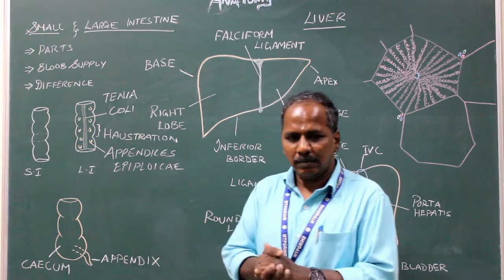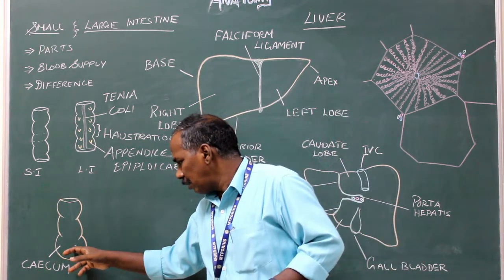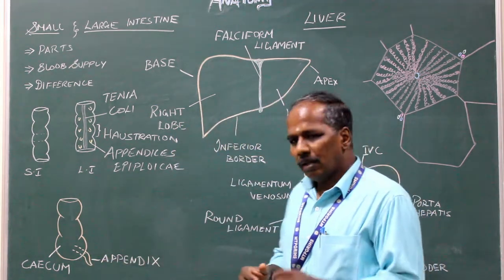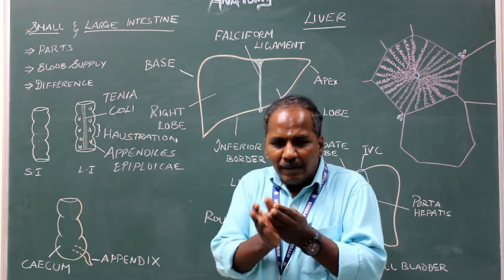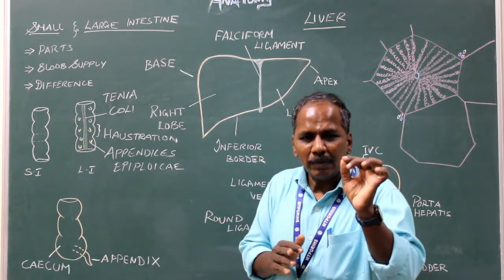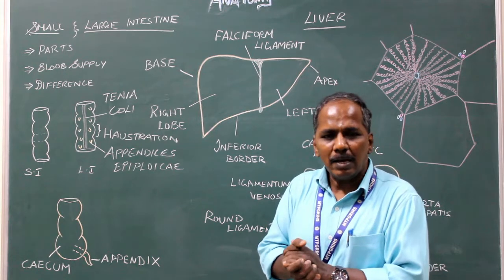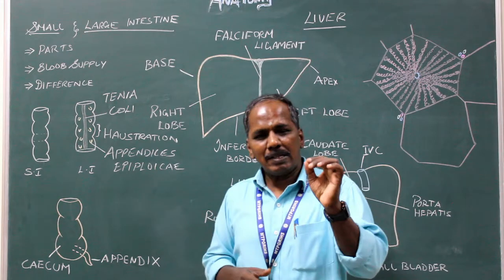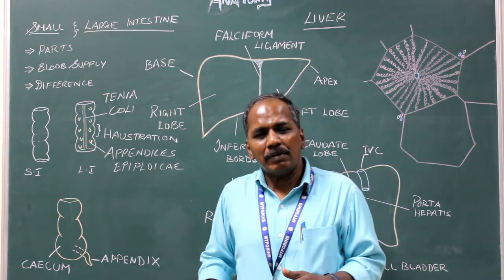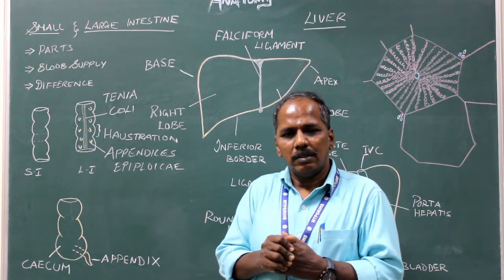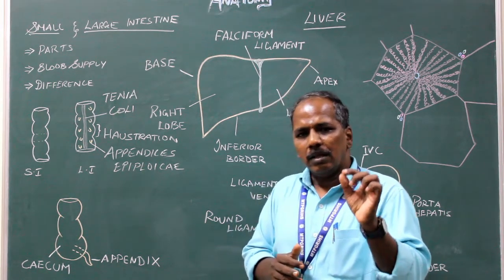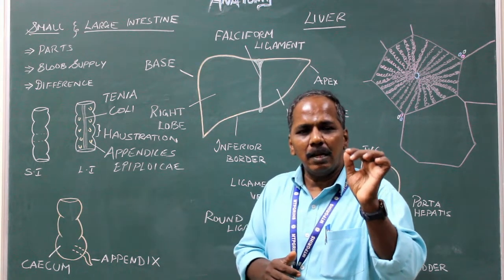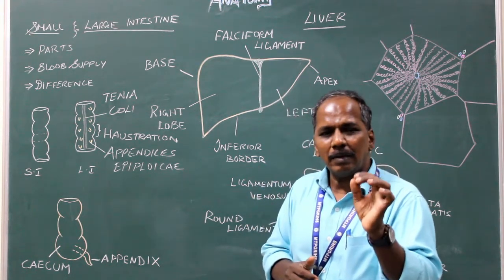Parts of the appendix: it has a base, body, and a tip. It is covered and suspended by a fold of peritoneum known as the mesoappendix. The appendix is situated in the right iliac fossa.